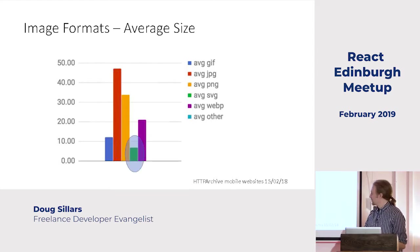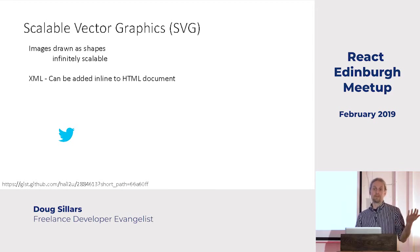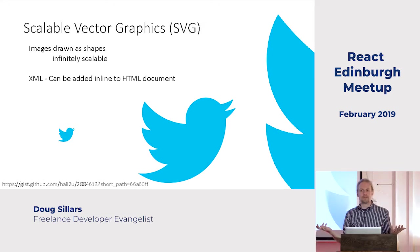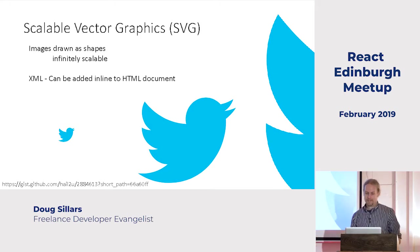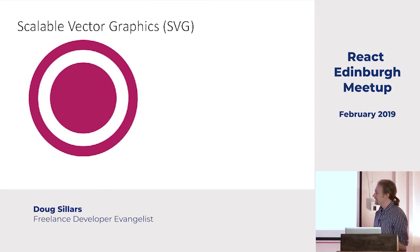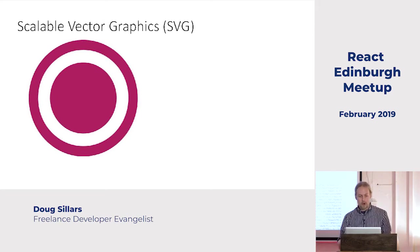Let's talk about vector graphics quickly. SVGs are really cool — they're images drawn as shapes, infinitely scalable, and based on XML. You can get the Twitter logo and stretch it to any size you want, and it always looks good because they're just shapes. I found a webpage with a Target logo that was an SVG. When I opened it up, it's XML — three circles drawn right there — but there was 946 kilobytes of Adobe Illustrator metadata embedded in it.